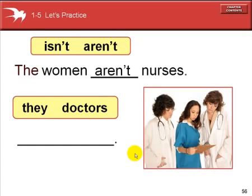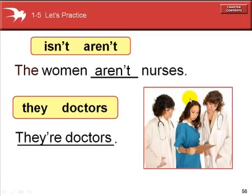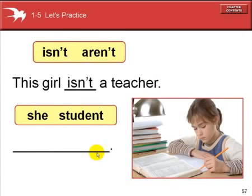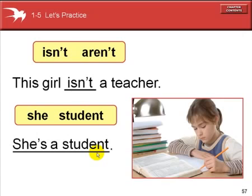The women aren't nurses. They're doctors. This is a use of the negative with the contraction — they aren't, or they are not. The second example is a positive: they are. They're doctors. This girl isn't a teacher — it's singular, negative. She's a student — singular, positive. She is a student. She's a student.